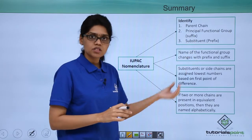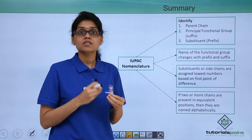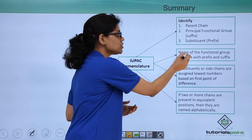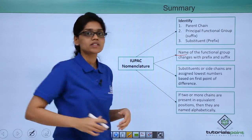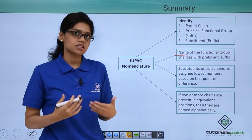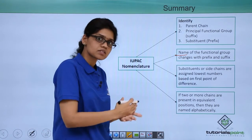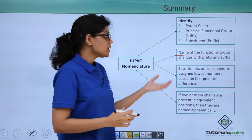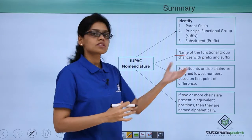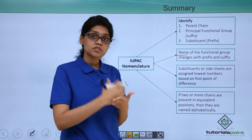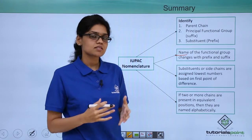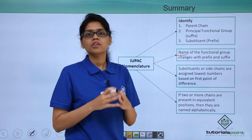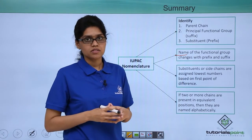We have seen how to identify a substituent, which will act as your prefix. We have also seen that the name of the functional group actually changes depending on whether it becomes your prefix or your suffix, and the substituents of side chains. How do we do the numbering? Substituents of side chains are assigned the lowest number based on the first point of difference.